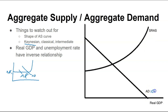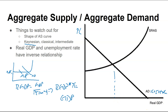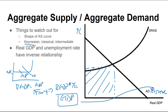For aggregate demand, the determinants are C plus I plus G plus net exports. Real GDP equals nominal GDP divided by the price index in hundredths. If I rearrange this, real GDP times the price index in hundredths — effectively the price level — equals GDP. And GDP equals C plus I plus G plus net exports. So the aggregate demand curve is actually our GDP, and anything that changes the expenditure approach can change aggregate demand.